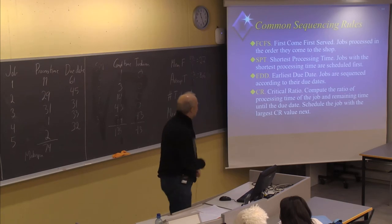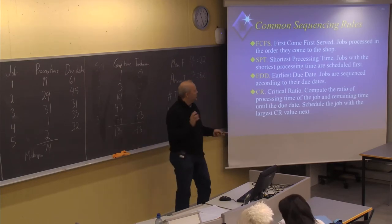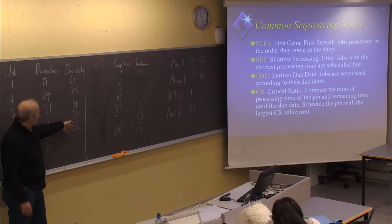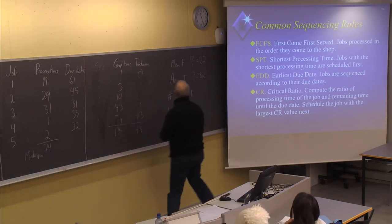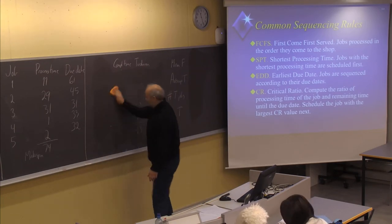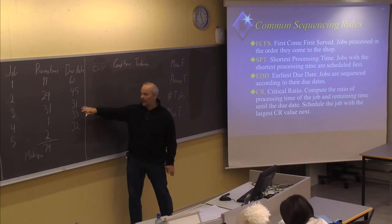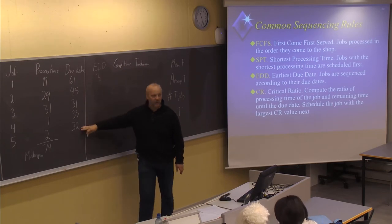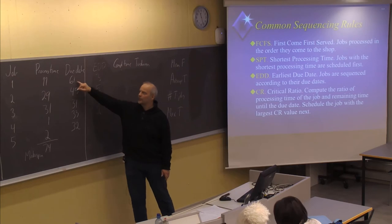Let's now look at the third strategy, the EDD — the earliest due date. Jobs are now to be sequenced according to the due dates. Looking at this column and sequencing by comparing due dates: the first job will be job number three. Then we have job number five, job number four, job number two, and job number one at last.